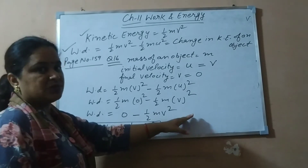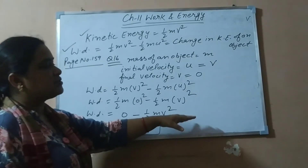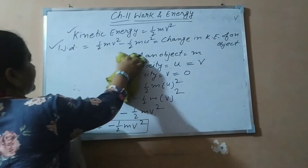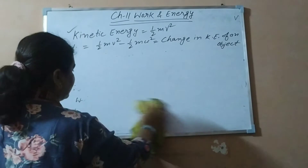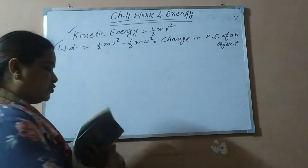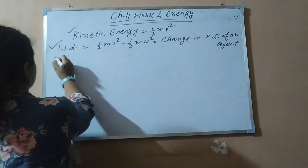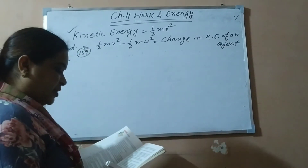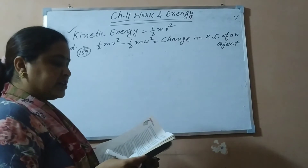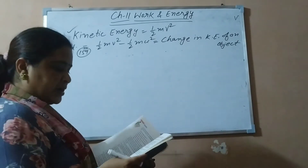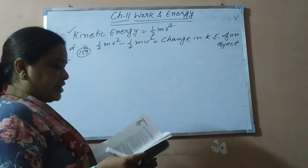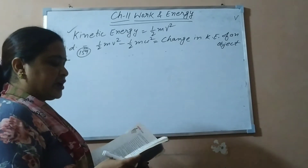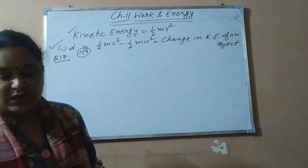Now let us start the next question related to kinetic energy — question number 17. On the same page 159, question number 17: calculate the work required to be done to stop a car of 1500 kilograms moving at a velocity of 60 kilometers per hour. So we have to stop the car.